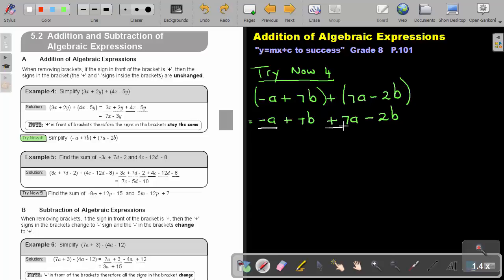There's a negative A and there's a positive 7A. There is a 7B and there's a negative 2B. So let's just add the like terms. So negative 1, remember there's a 1. So negative 1 plus 7.